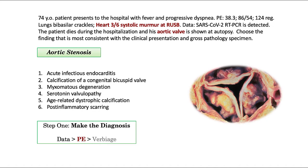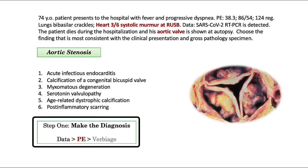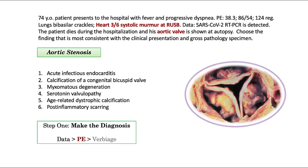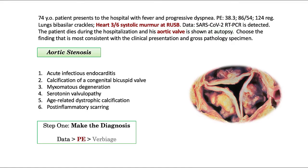This sounds so elementary, but students, for understandable reasons, often waffle on their diagnosis after reading the answer options. We'll explore that in a moment. But first, let's start with our premise that data is more important than physical exam, which is more important than verbiage. In this question, the data consists of a heart valve and they tell us it is the aortic valve. On physical exam, he's described with a 3 over 6 systolic murmur at the right upper sternal border, which is the NBME language for aortic stenosis. So we just made the diagnosis. The patient has aortic stenosis.